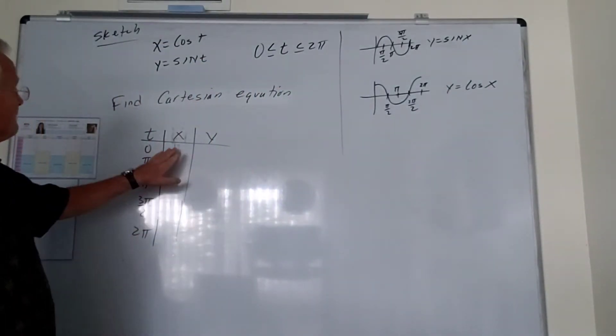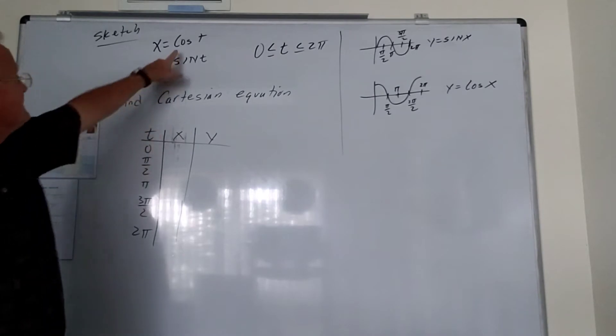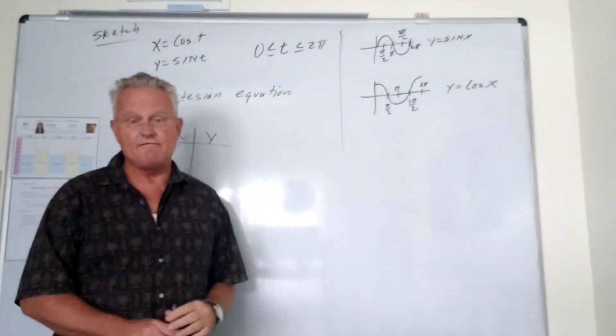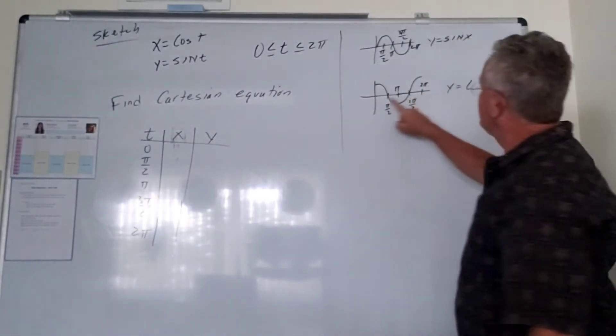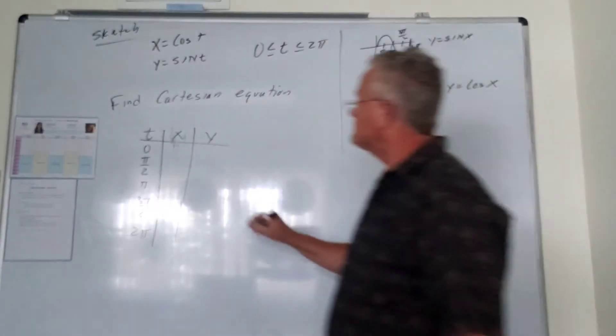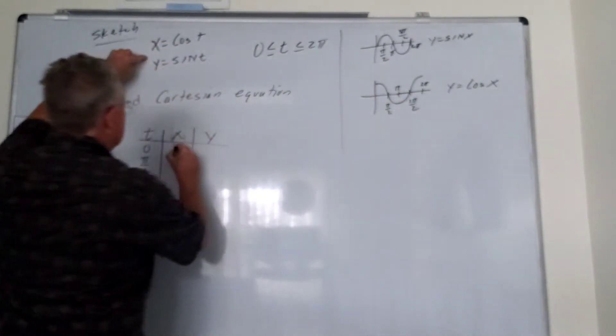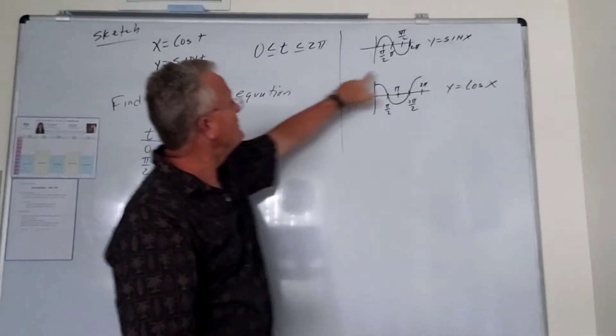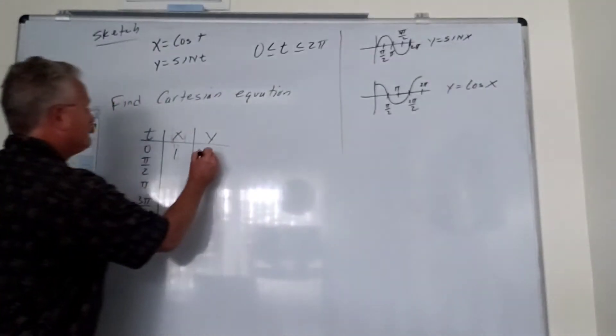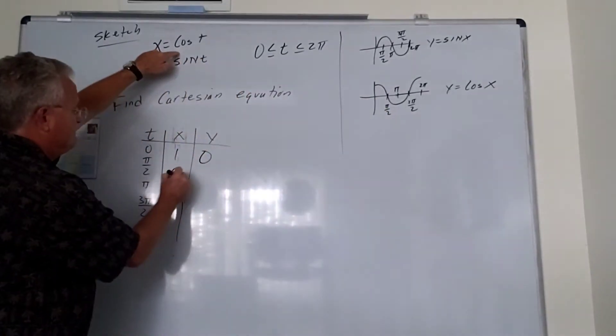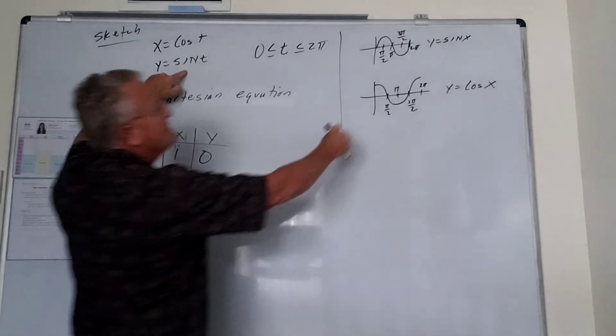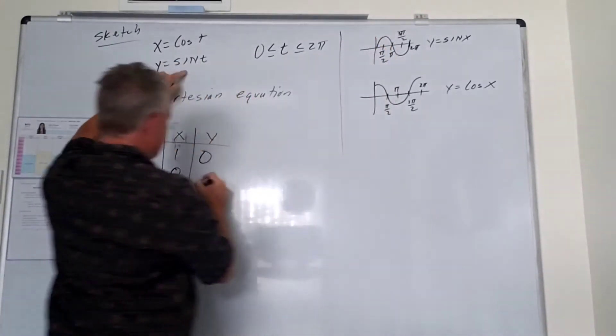All right, so to figure out the values when t is 0, we need to refer to the graph of sine and cosine. So the cosine of 0 is 1, so x is 1, the sine of 0 is 0. At 90 degrees, x is cosine, which is 0, y is sine, the sine of 90 is 1.